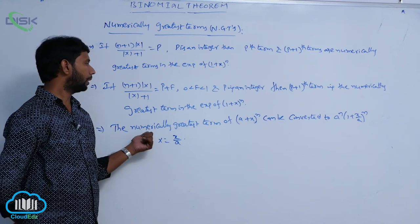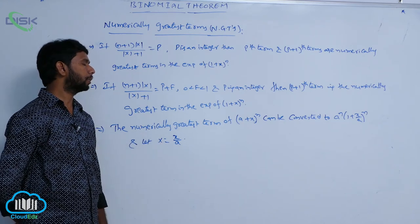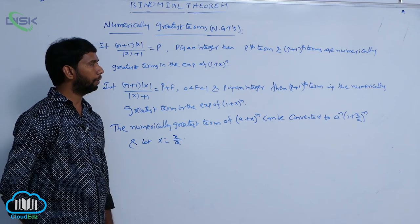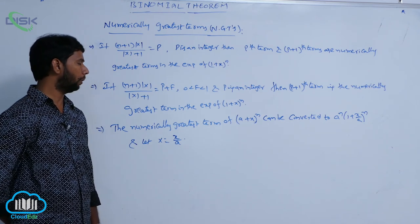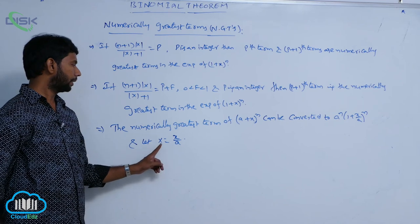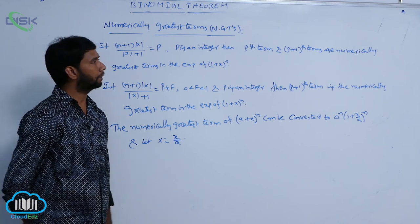The numerically greatest term of (A + X)^N can be converted to the form A^N into (1 + X/A)^N, and let X be equal to X/A.